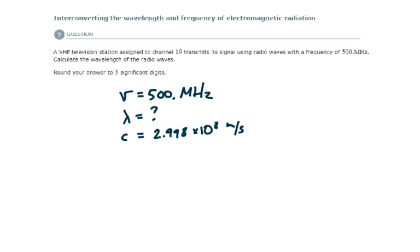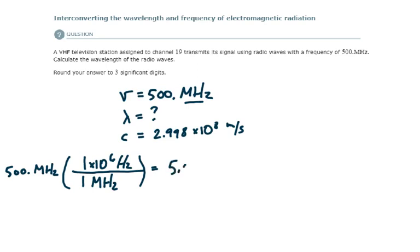The first thing we want to do is convert this value from megahertz to hertz. So if I have 500 megahertz and use dimensional analysis to convert this, then 1 megahertz is 1 times 10 to the 6 hertz. If I put this into the calculator, that gives me 5 times 10 to the 8 hertz. Now that I've converted this value from megahertz to hertz, I can plug it into the equation.